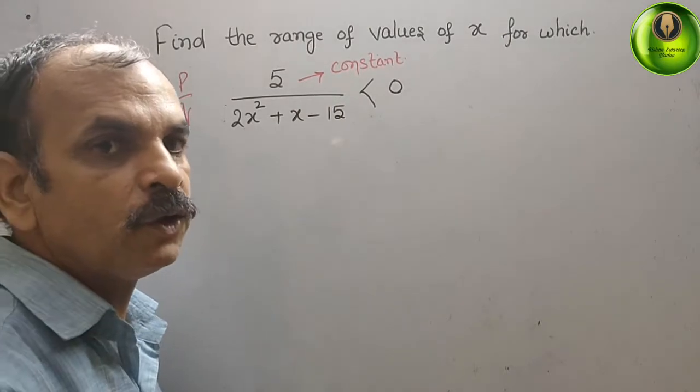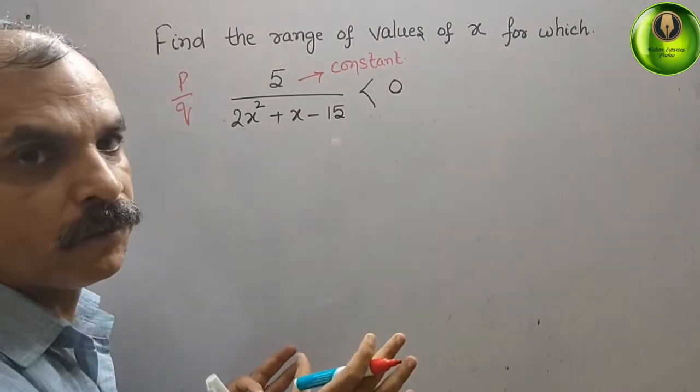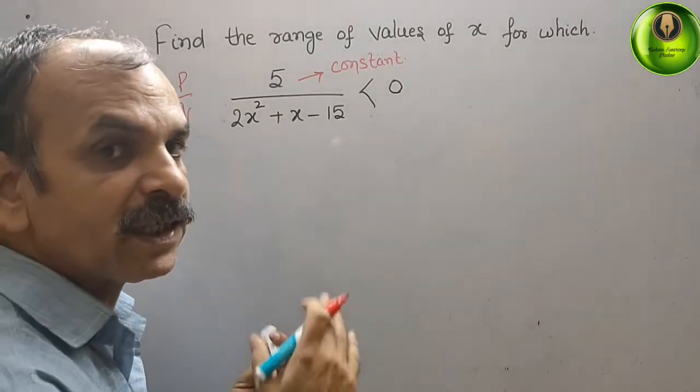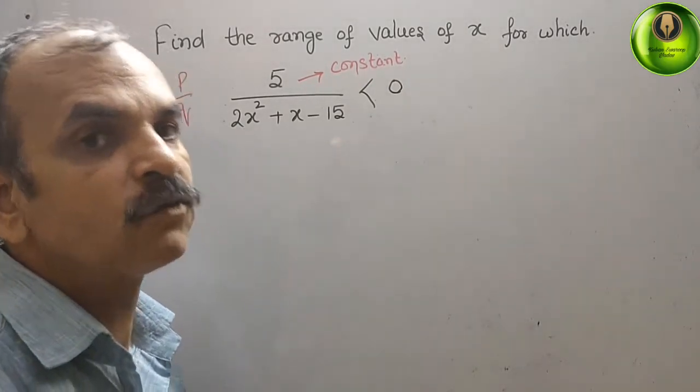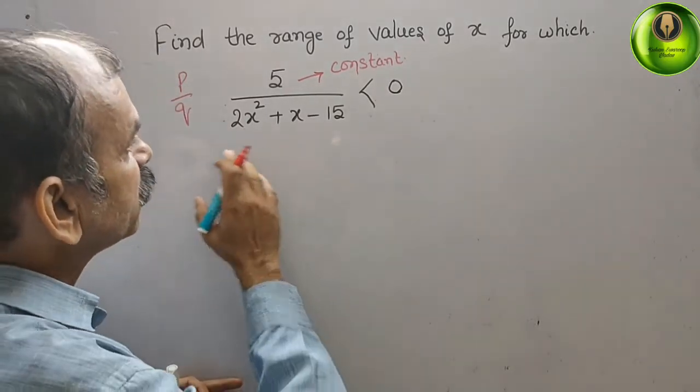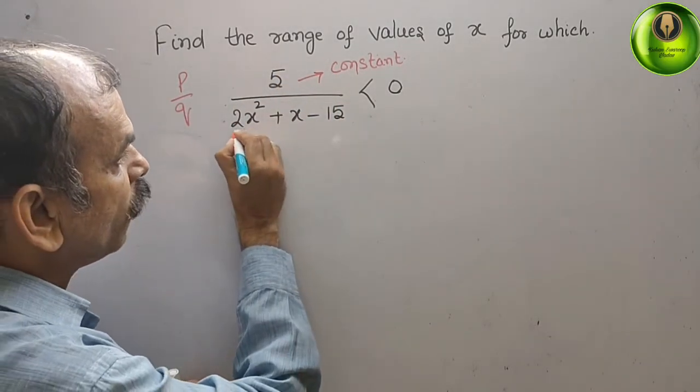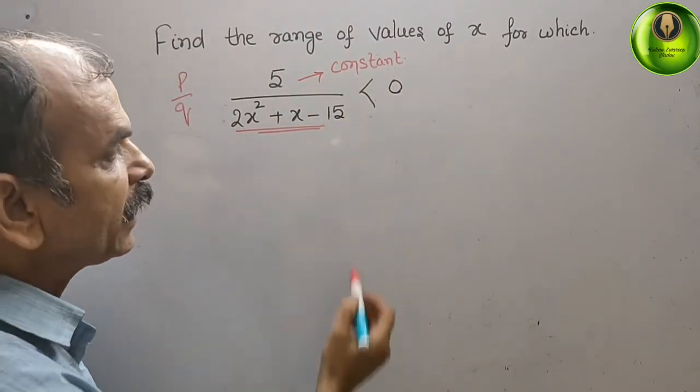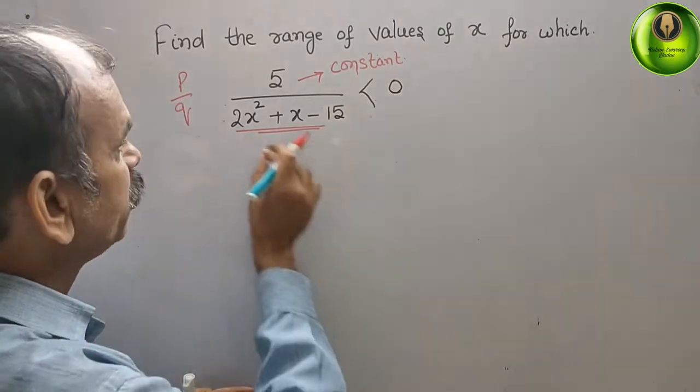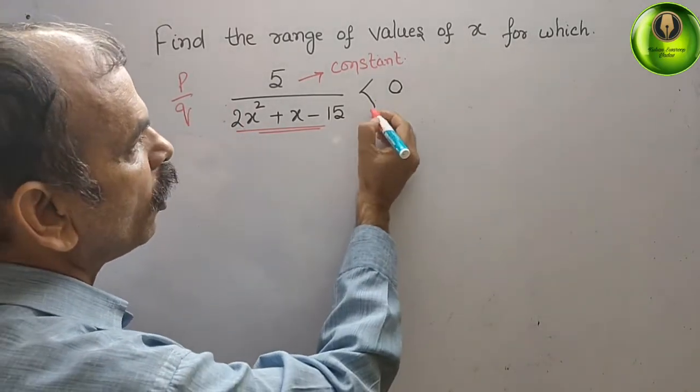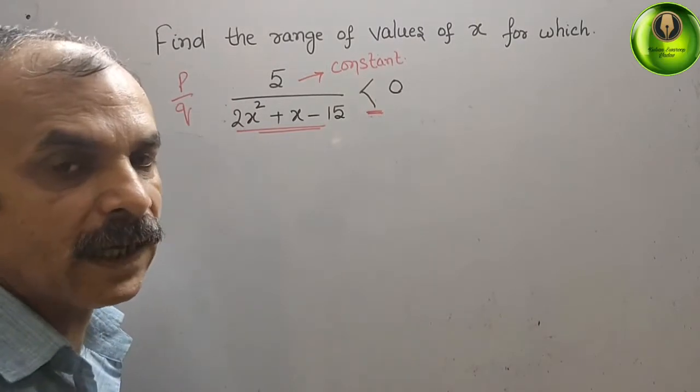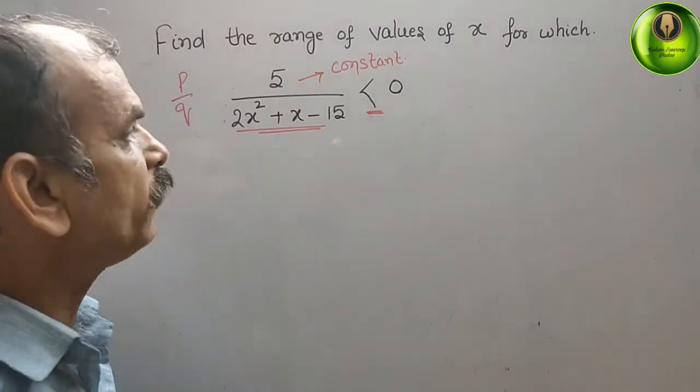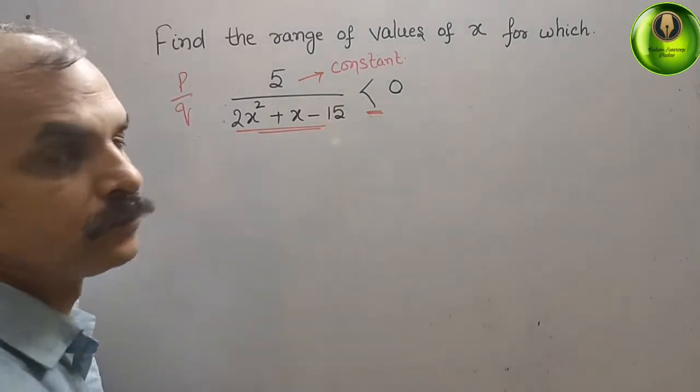Now what we have to do: Q is at the denominator, and the equation is at the downside. That means this equation will follow only this much - less than 0. That means Q will follow your inequality sign, less than 0. So now we will find out the value of this only.